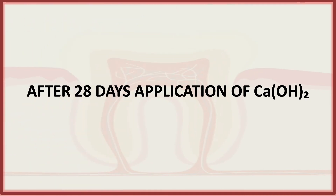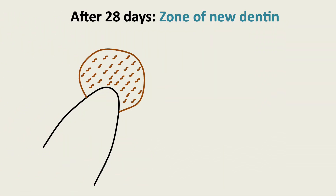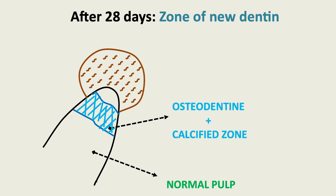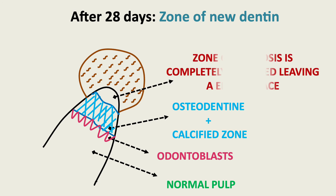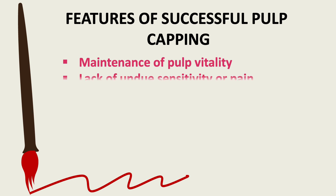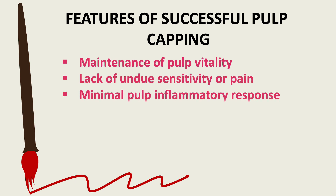After 28 days of application of calcium hydroxide — note that all these changes are seen radiographically, not clinically — there is a zone of new dentine; the pulp becomes almost normal. We have osteodentine plus a calcified zone; odontoblastic cells differentiate into new dentine; and the zone of necrosis is completely debrided, leaving an empty space.